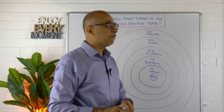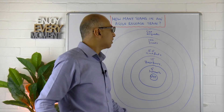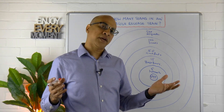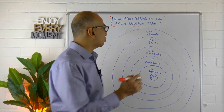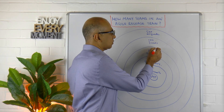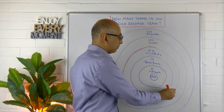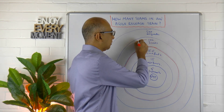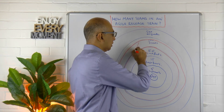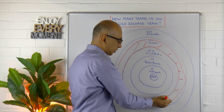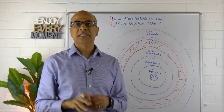If we accept that framework, where does an agile release train fit in? We say it's between 50 and 125 plus people, so you're talking roughly around the good friends zone up through the Dunbar friends zone — that's roughly where your agile release train would fit in the overall scheme of things.